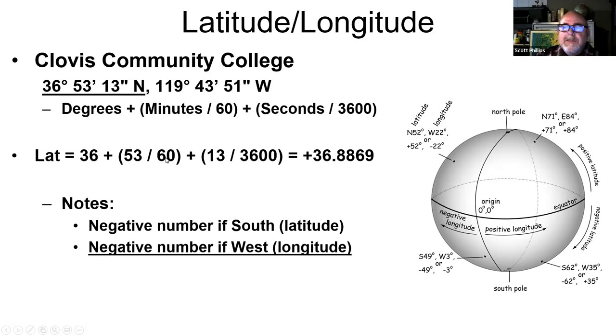The latitude of Clovis Community College would be 36 degrees plus 53 minutes divided by 60. That would turn the minutes into the decimal part of 36. Then plus the seconds, we would add those in as well. That would be 1/60th of 1/60th, so 13 here divided by 3600. We would turn this number into this in decimal degrees. It'd be a positive number because it would be north of the equator - 36.8869.